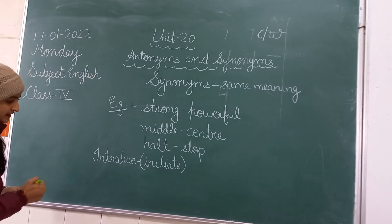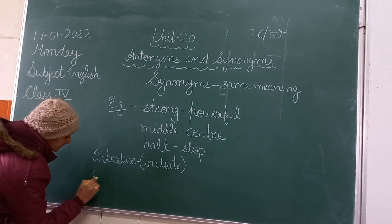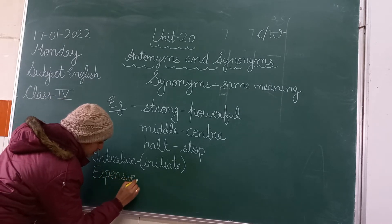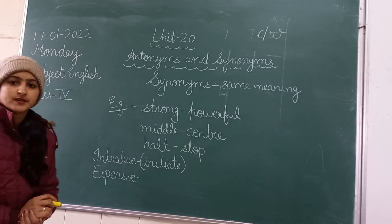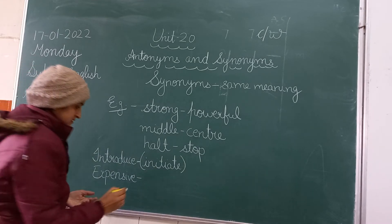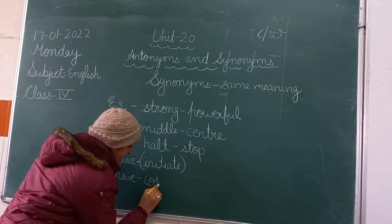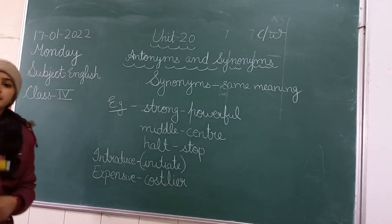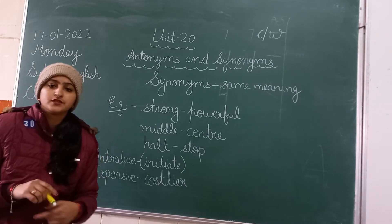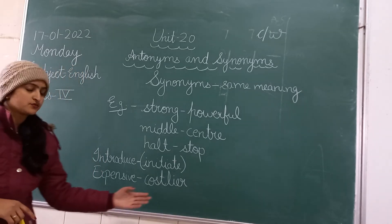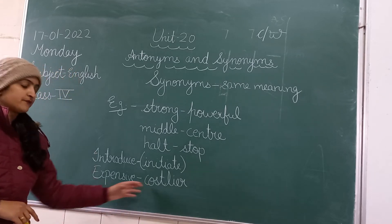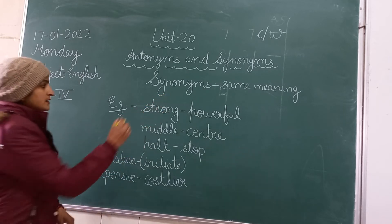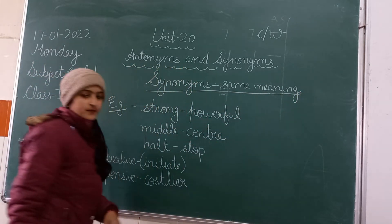Next is Expensive. The synonym of Expensive can be Costlier. Costlier means the thing which has more price, or which is very expensive or very costly. These words refer to the same meaning — Synonyms are same meaning.